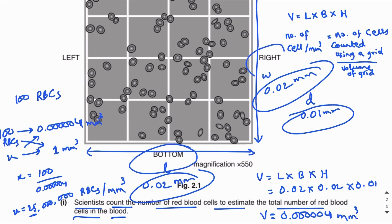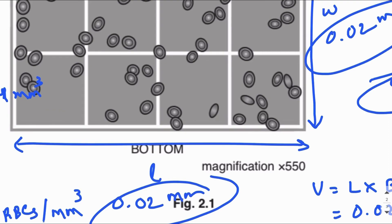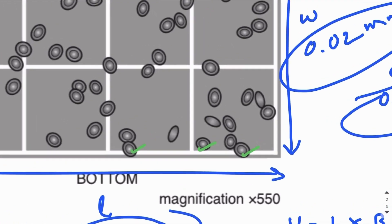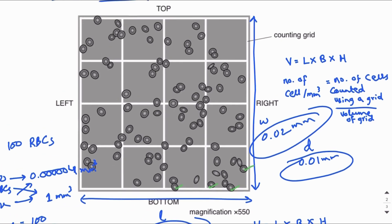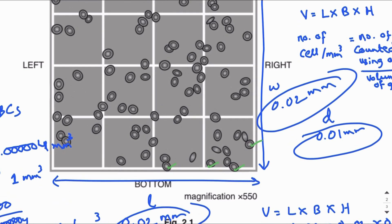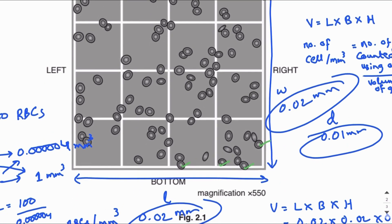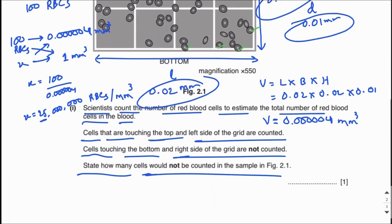We have to state how many cells would not be counted in figure 2.1. The cells touching the bottom and right of the grid will not be counted. This cell is touching the bottom — not counted; this one also; this one also. This cell is touching the right — not counted. In total, four cells will not be counted: three cells touching the bottom and one cell touching the right side of the grid.